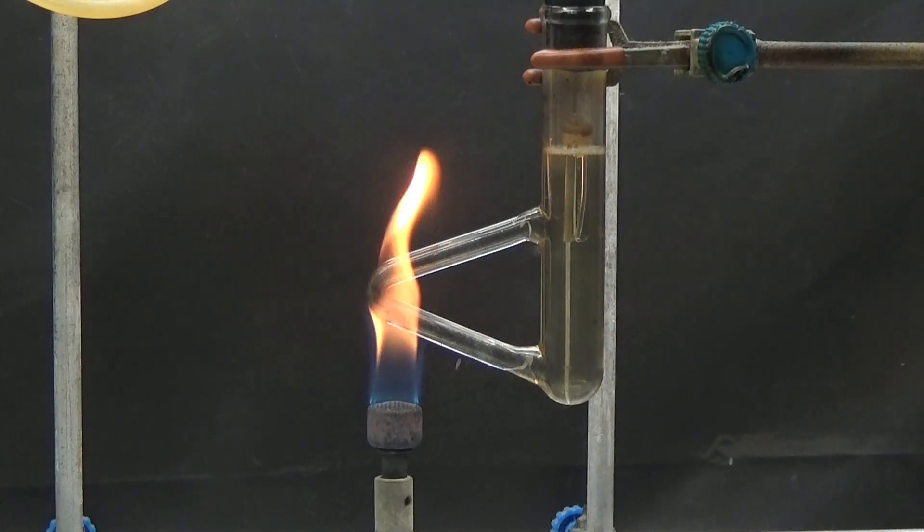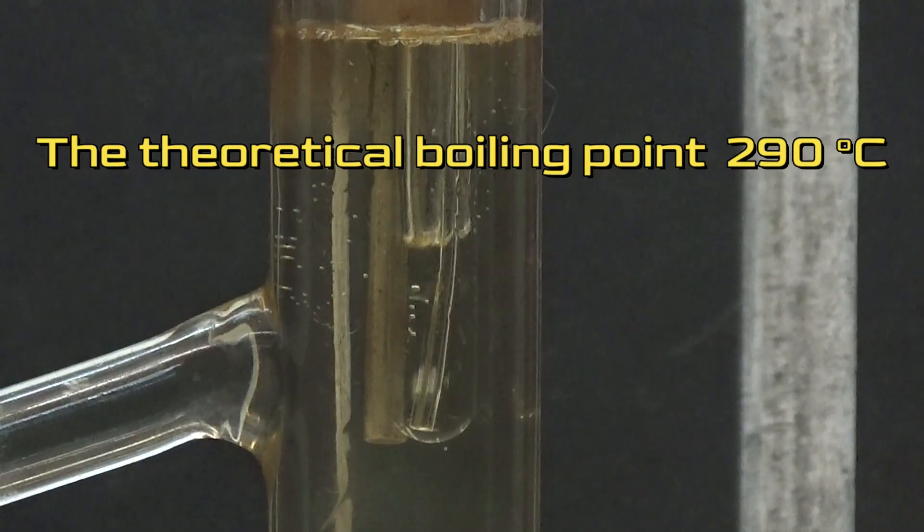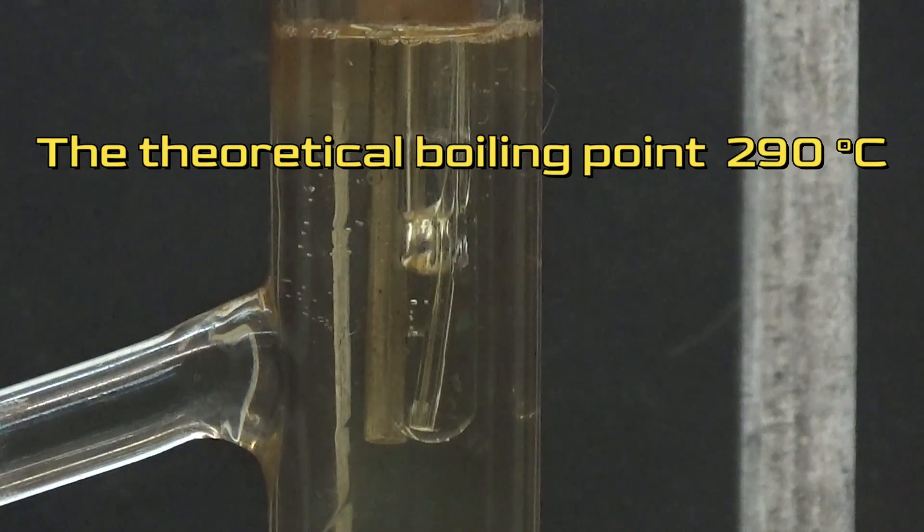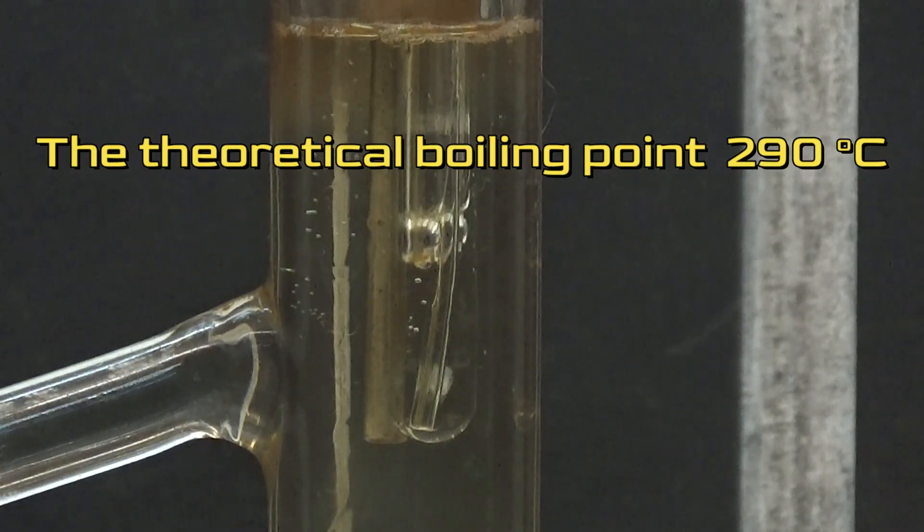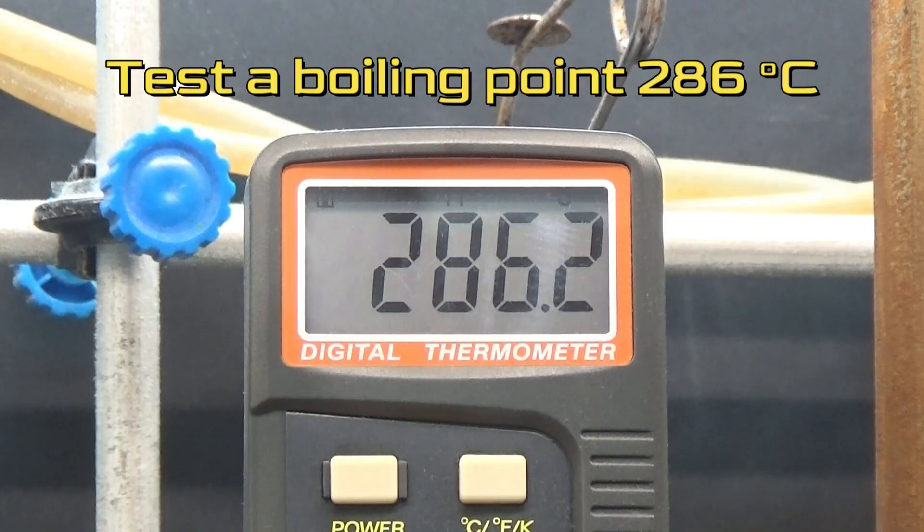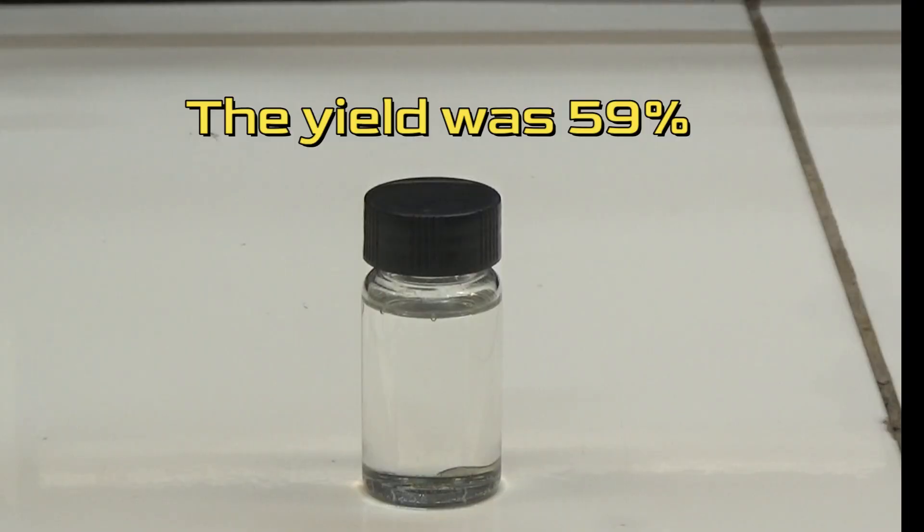The boiling point of the product obtained has been determined. The theoretical boiling point of diethyl phthalate is 290 degrees. In my test, a boiling point of 286 degrees was obtained. The yield was 59% with the phthalic anhydride reference.